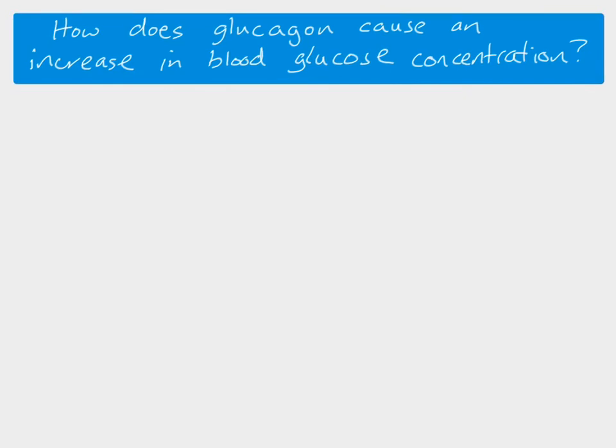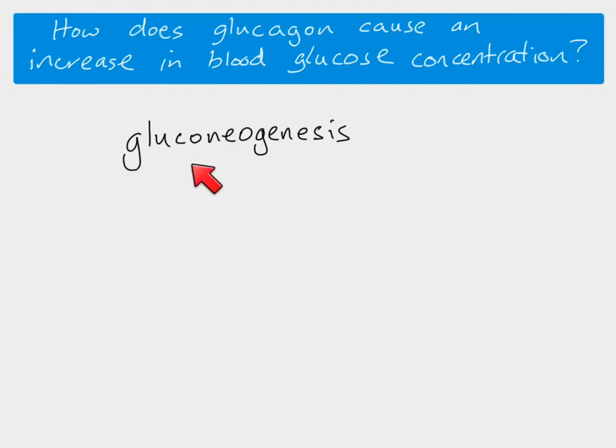Finally, glucagon can also cause an increase in the process of gluconeogenesis. Gluconeogenesis is where glucose is produced using amino acids or fatty acids — it's the production of new glucose that wasn't there before. This can happen in liver cells and muscle cells, and glucagon causes an increase in gluconeogenesis.